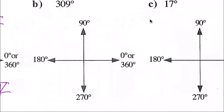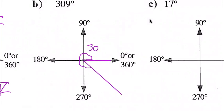Question B: 309 degrees. Starting on our initial arm, counting counterclockwise — there's 90, there's 180, there's 270, and somewhere into quadrant four we'd have 309 degrees. Label that 309. The reference angle — from the terminal arm to the nearest x-axis — would be 360 minus 309, which is 51 degrees.